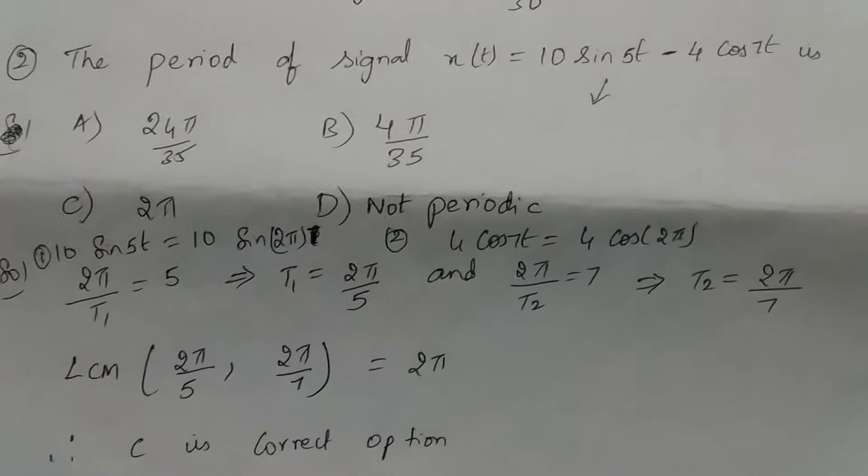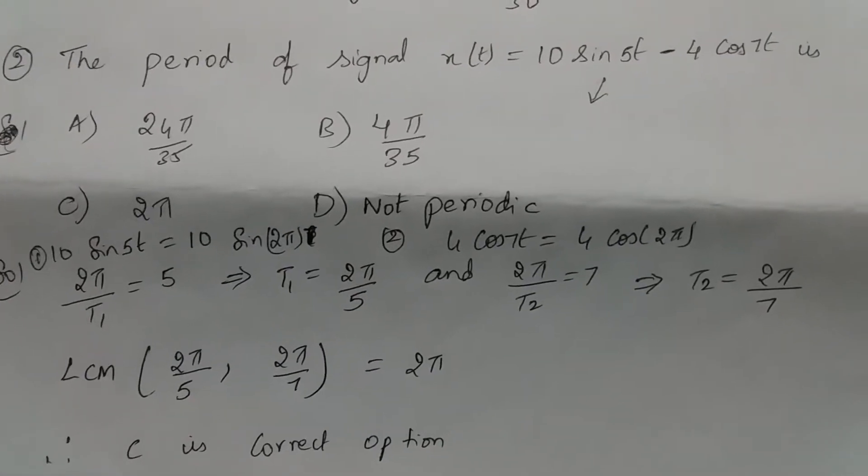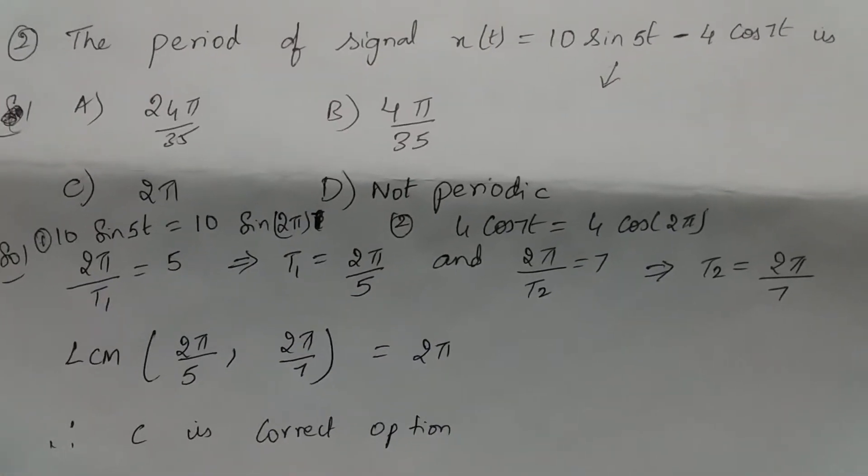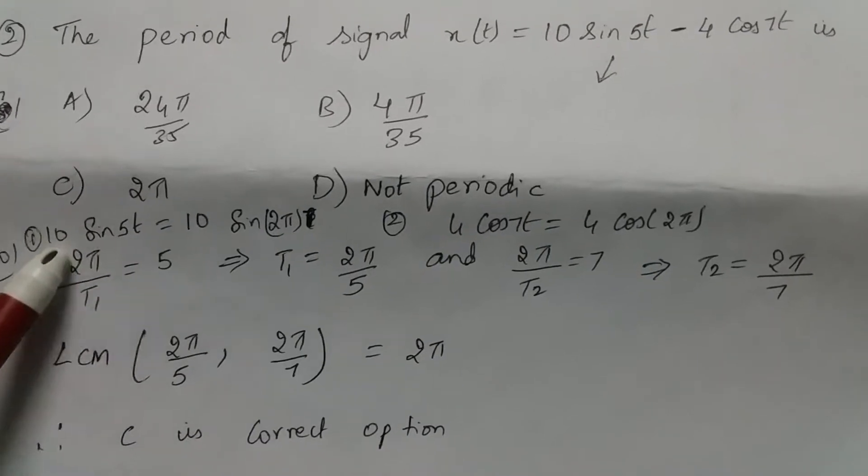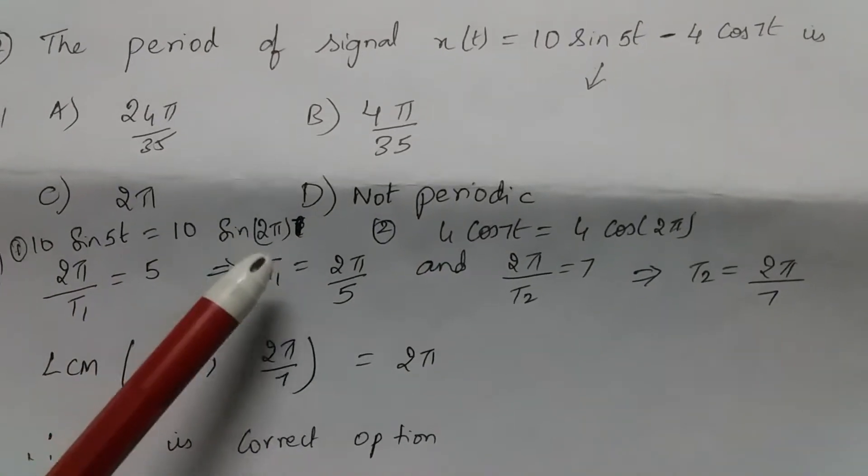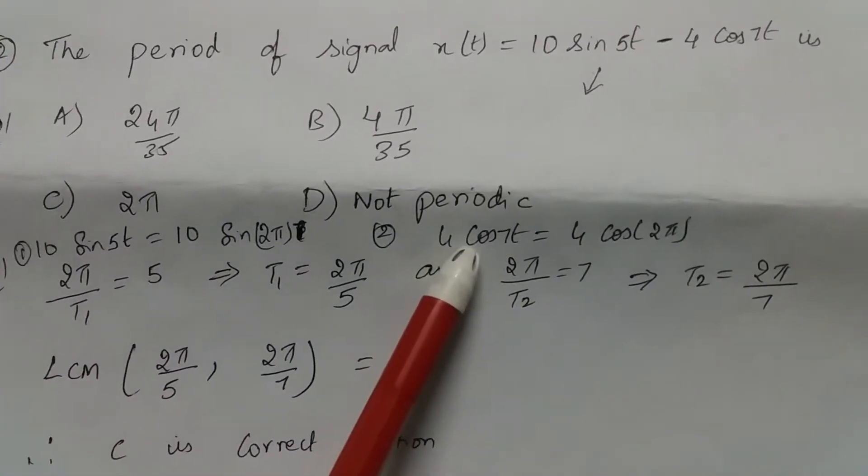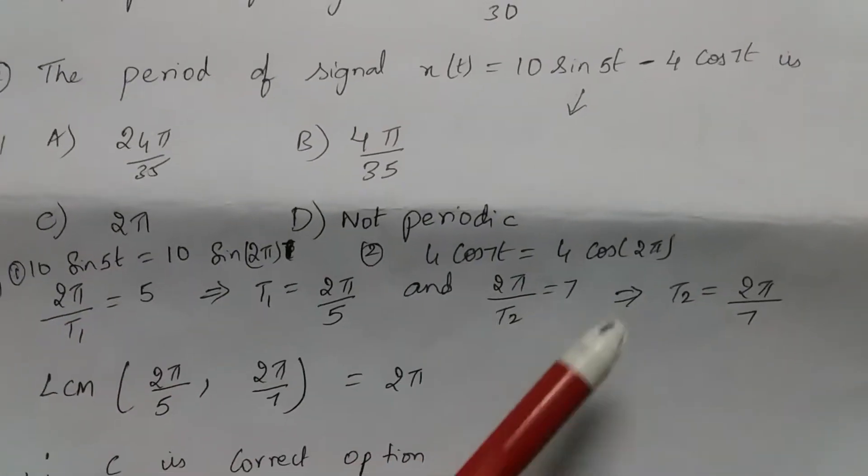Now the period of signal x(t) is equal to 10 sin 5t minus 4 cos 7t. So let's consider 10 sin 5t is equal to 10 sin 2π and 4 cos 7t is equal to 4 cos 2π. So this is t1 and this is t2.